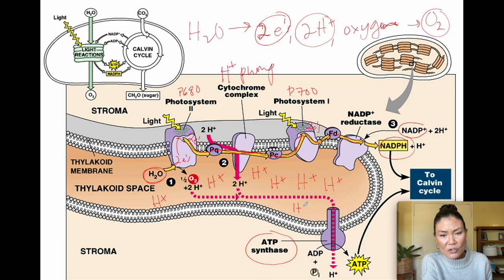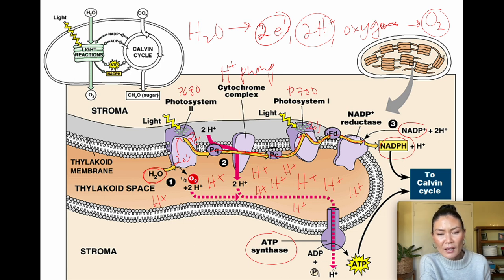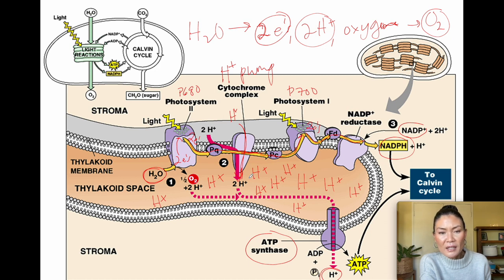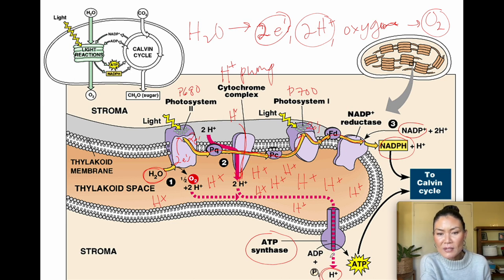The concentration gradient built up by the cytochrome complex proton pump — powered by the moving electron — is used to make ATP as protons move down their concentration gradient through ATP synthase into the stroma. The H+ protons in the stroma get pumped back into the thylakoid space when electrons pass through the cytochrome complex again, so protons are constantly being recycled — moving in, building up the concentration gradient, moving down, and being pumped back in — all to make ATP.